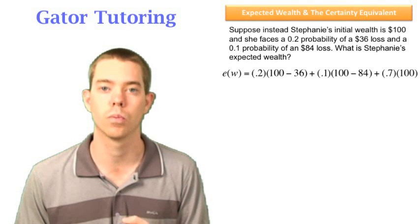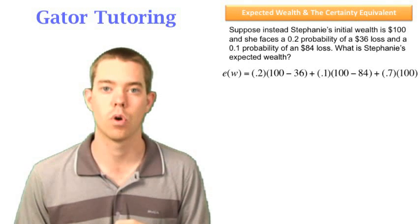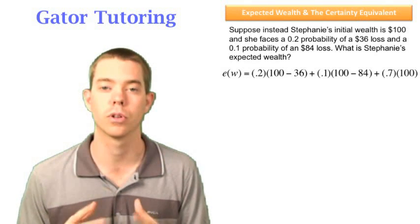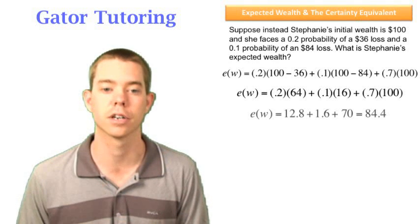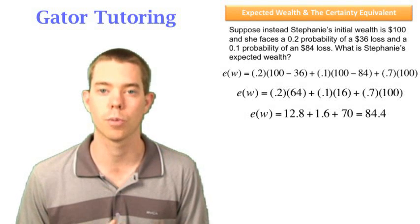So we are given 0.2 and 0.1. To solve for 0.7, we just simply add those two together and subtract those from one. So 0.2 plus 0.1 is 0.3, 1 minus 0.3 gives us the 0.7. We can add this up and we find that her expected wealth is equal to $84.4.